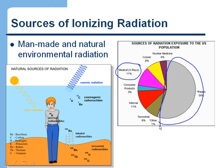Other natural sources include cosmic rays, which simply means ionizing radiation that comes from space — and obviously there's not much we can do about that. There are also other radioactive materials in the Earth, like uranium and thorium, that create radiation as well — that's what we mean by terrestrial. And then we have consumer products, like smoke detectors, which use radioactive materials and produce ionizing radiation.